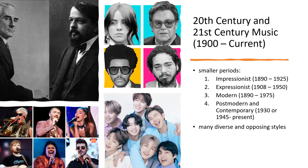The 20th and 21st centuries can be broken down into even smaller periods. The Impressionist period is from 1890 to 1925. The Expressionist is from 1908 to 1950. The modern period is from 1890 to 1975, while the postmodern or contemporary is from 1930 or 1945 up to the present. These subgenres of music are normally lumped into one large category since there are so many diverse and opposing styles. The 20th and 21st centuries can only be described as free control for composers.